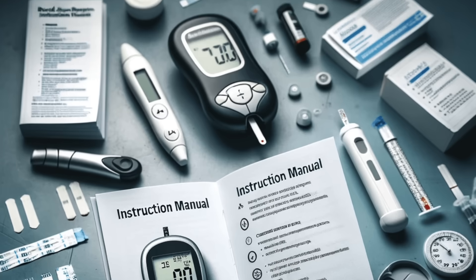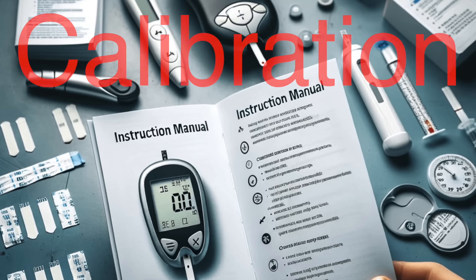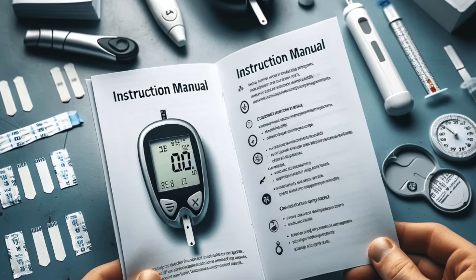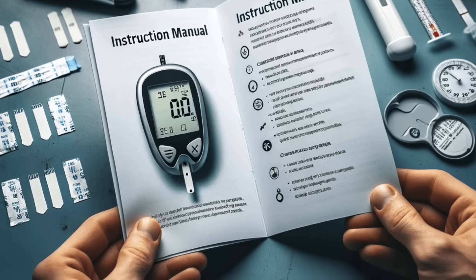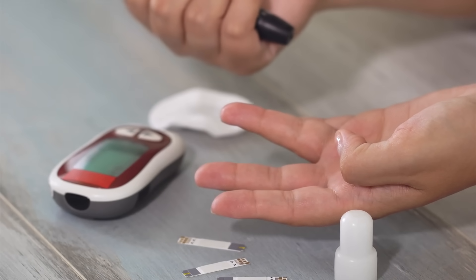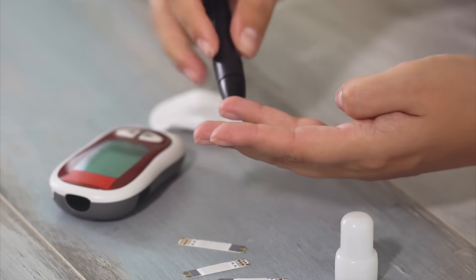To ensure accurate readings, glucose meters rely on calibration. Some devices are pre-calibrated, while others require users to enter a code or insert a specific test strip to align the meter with the strip's unique properties. This step ensures that the device interprets the electrical signal correctly.